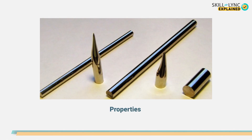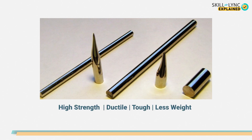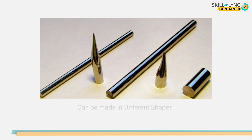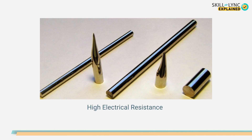Now let's see some properties of metallic glasses. Metallic glasses are of high strength, high ductility, tough, and also of less weight. They can be cast or made into different shapes, and they exhibit high elasticity. In addition to this, they are corrosion resistant and possess greater electrical resistivity when compared to their metallic counterparts. Lastly, they are soft magnetic in nature, meaning they can be easily demagnetized.